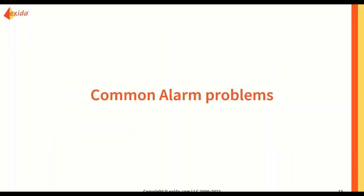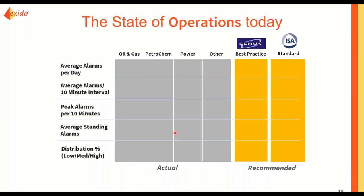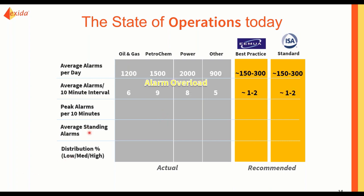Now let's get into the main topic. So why do we actually need alarm management in the first place? That's because we see a lot of different alarm problems. The current situation in the industry — oil and gas, petrochemical, power, and other processing plants — is that they have at least about a thousand alarms per day.